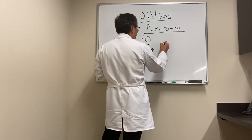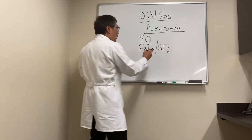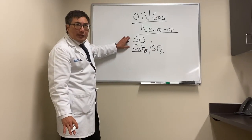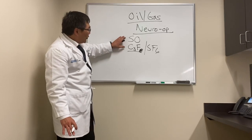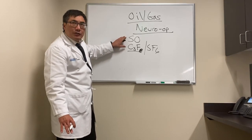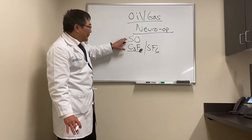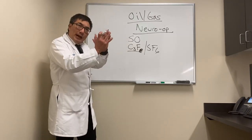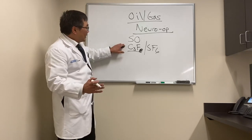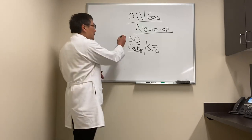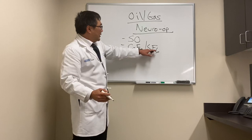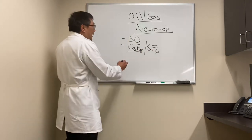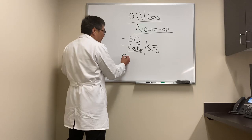C3F8 and SF6 are what we use for intraocular tamponade after retinal detachments. Silicon oil is often used in giant retinal tears, proliferative vitreoretinopathy, severe proliferative disease, or recurrent detachment — we need that oil to tamponade the retina onto the back of the eye. Silicon oil needs to be removed, but intraocular gases simply resorb over time.